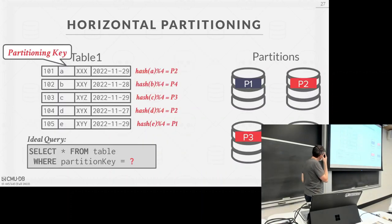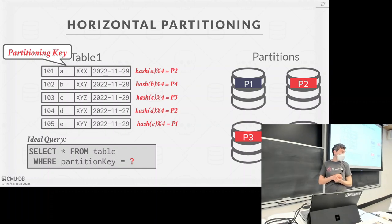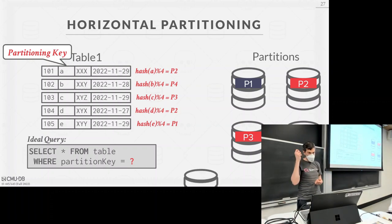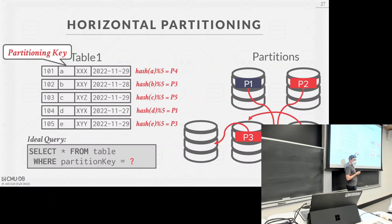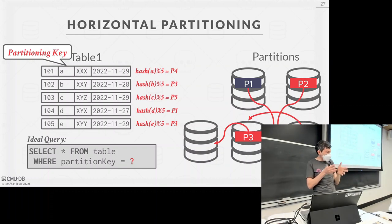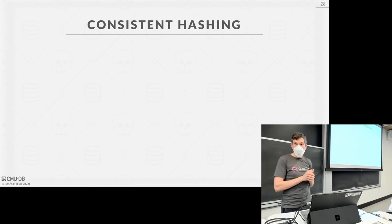The problem with hash partitioning using mod N is that when you add or remove nodes, you have to rehash everything, which shuffles data around — because now you're modding by a different number. Range partitioning lets you excise ranges, but if you change the number of partitions using a modular hash, you have to rehash everyone. The solution to this problem is called consistent hashing.